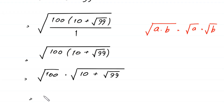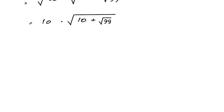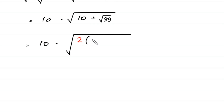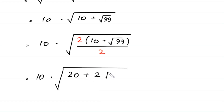Next, square root of 100 equals 10, so we have 10 times square root of (10 plus square root of 99). Now we multiply and divide this expression by 2, giving 10 times square root of (2 times (10 plus square root of 99)) divided by 2. This 2 times 10 becomes 20, plus 2 times square root of 99, all divided by 2.